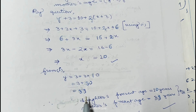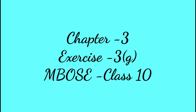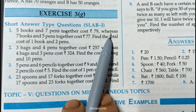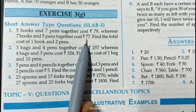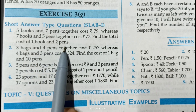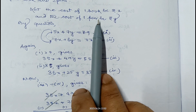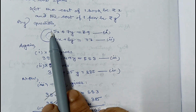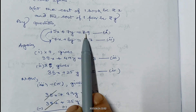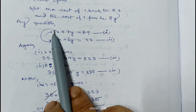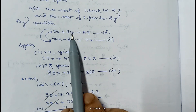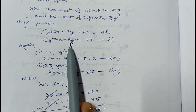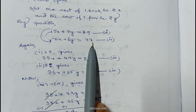In exercise 3G, question 1 is: 5 books and 7 pens together cost Rs. 79, whereas 7 books and 5 pens together cost Rs. 77. Find the total cost of 1 book and 2 pens. Let the cost of 1 book be Rs. x and cost of 1 pen be Rs. y. So 5x plus 7y equals 79 — equation 1. And 7x plus 5y equals 77 — equation 2.